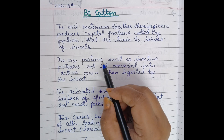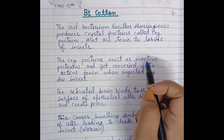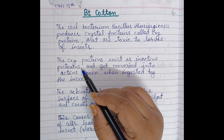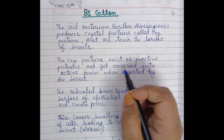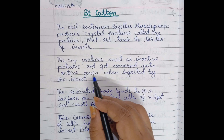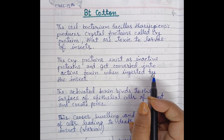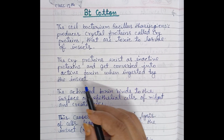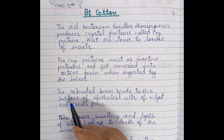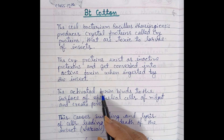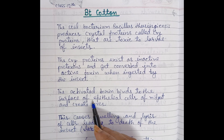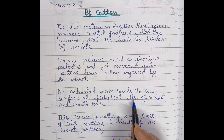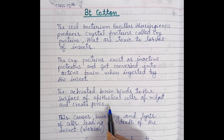The cry proteins exist as inactive protoxins and get converted into active toxin when ingested by the insect. The activated toxin binds to the surface of epithelial cells of the midgut and creates pores.